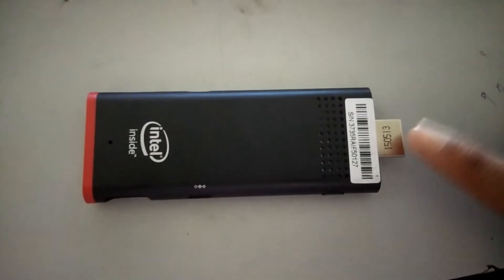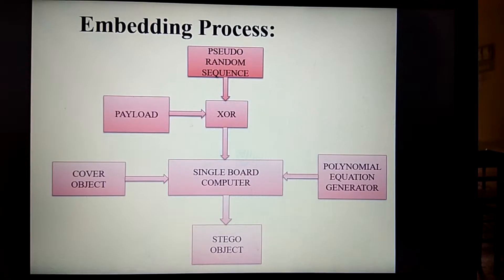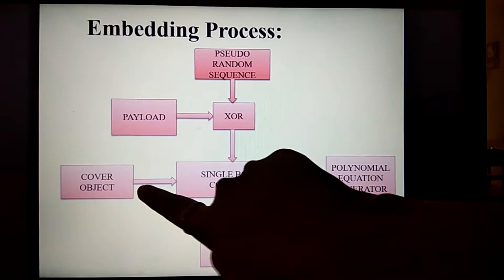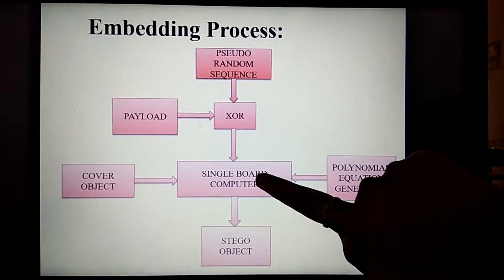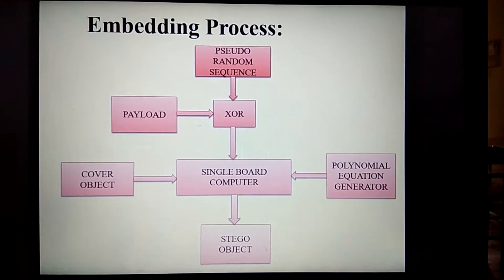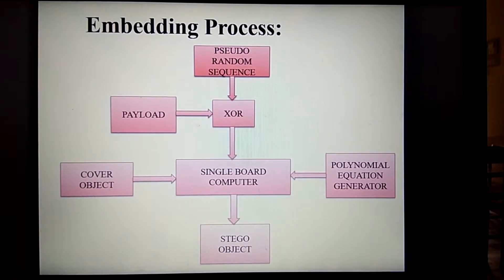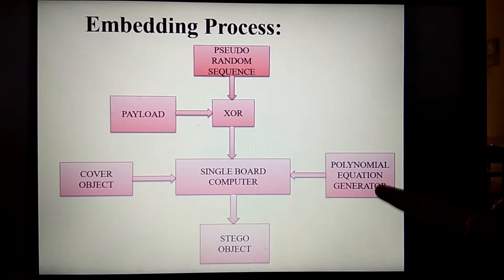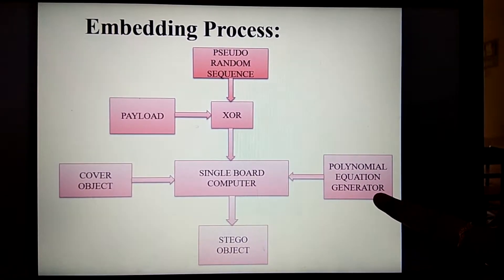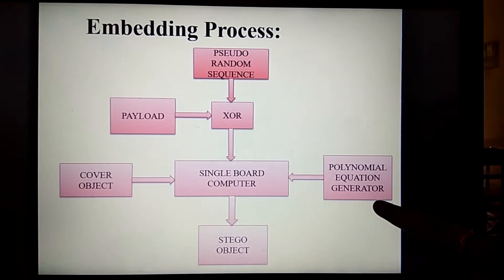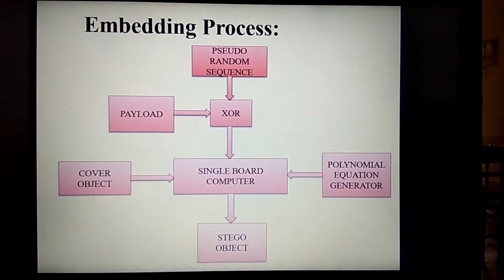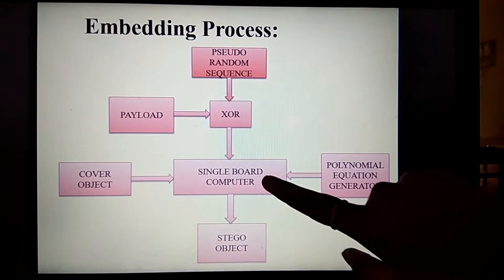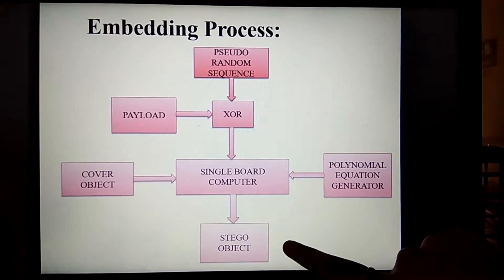It connects to your TV via an HDMI port. Along with the coded payload, we give the cover object to the Single Board Computer. The cover object may be an audio or image file in which we are going to hide the data. Using the polynomial equation generator, we generate polynomial equations to find the locations in the cover object where data will be hidden. The result of this embedding process is the Stego object.